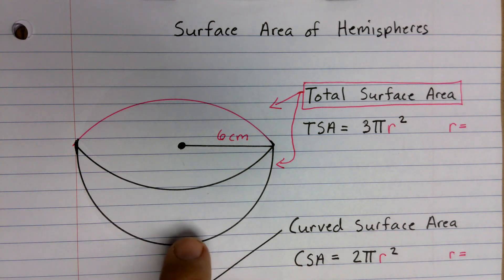So if you take a sphere and you cut it in half, and you need to find a surface area, there's two different types of surface area you can find.